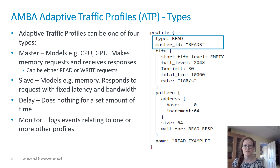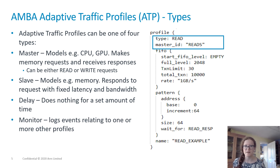ATP profiles can be one of a number of different types. Master and slave profiles represent the devices within a system and can send or receive data. A master profile makes read or write requests, whereas slave profiles respond. Delay and monitor profiles are fairly self-explanatory: delays provide fixed periods of nothing happening, and monitor profiles record events relating to other profiles.